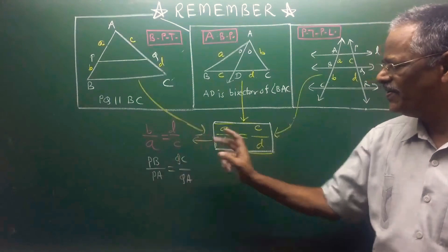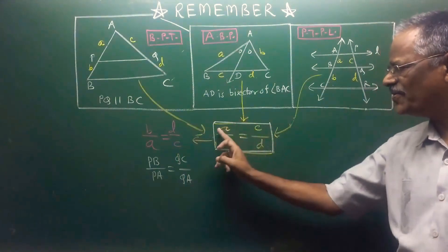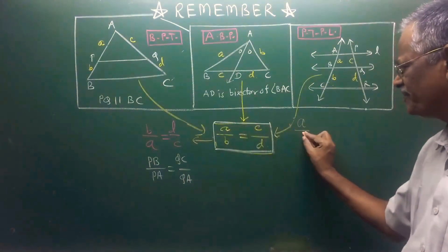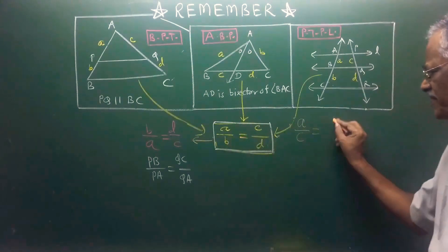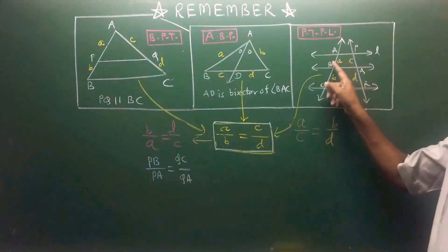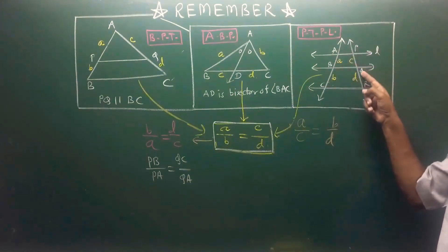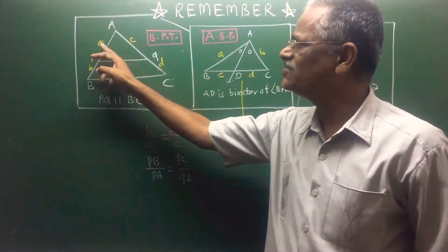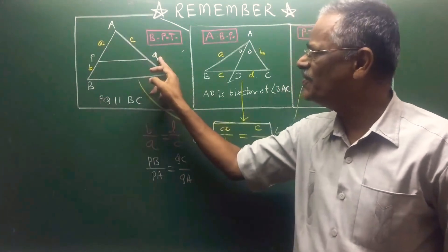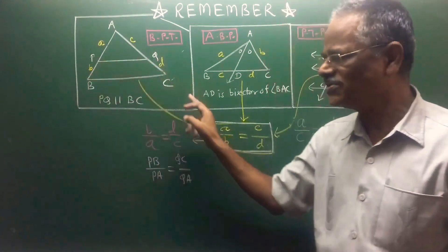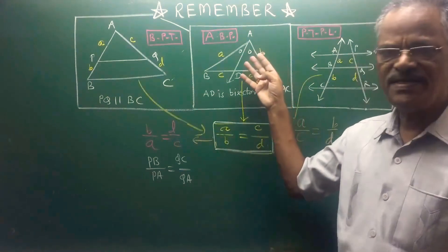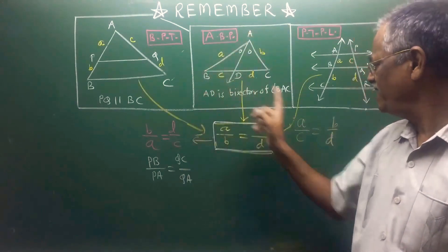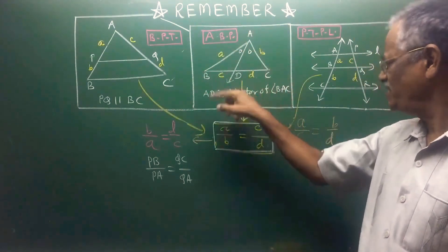We can use invertendo, then use alternendo. What is that? Alternendo: A upon C is equal to B upon D. It is again true here — A upon C means AB upon PQ is equal to BC upon QR. Same result is possible here also: AB upon BD is equal to AC upon CD.